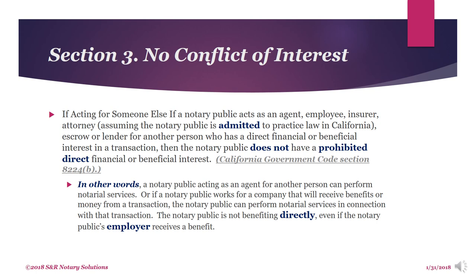No conflict of interest. If a notary public acts as an agent, employee, insurer, attorney (assuming the notary public is admitted to practice law in California), escrow or lender, or another person who has a direct financial or beneficial interest in a transaction, then the notary public does not have a prohibited direct financial or beneficial interest. In other words, a notary public acting as an agent for another person can perform notarial services. Or, if a notary public works for a company that will receive benefits or money from a transaction, the notary public can perform notarial services in connection with that transaction, since the notary public is not benefiting directly even if the employer receives a benefit.